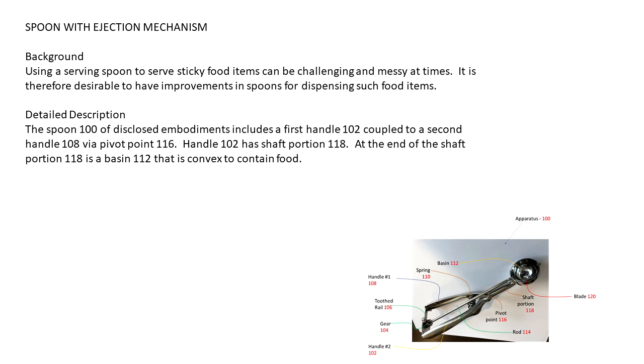Now let's start with the detailed description. We'll start talking about the parts of the device and use the numbers that we previously defined in our figure. The spoon 100 of disclosed embodiments has a first handle 102 coupled to a second handle 108 via pivot point 116. Handle 102 has a shaft portion 118. At the end of the shaft portion 118 is a basin 112 that is convex to contain food.